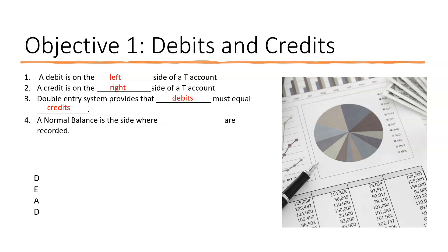A normal balance — if you think about accounts, the normal balance in an account is the side where increases are recorded. So assets have a normal debit balance; they are increased with a debit. Liabilities have a normal credit balance, and increases to liabilities are on the credit side.